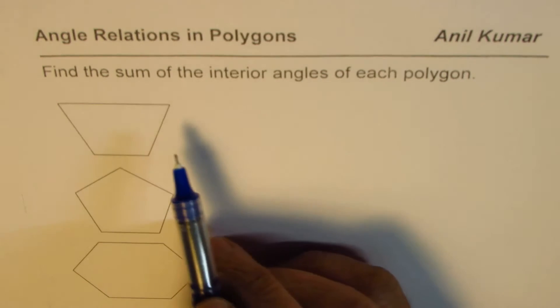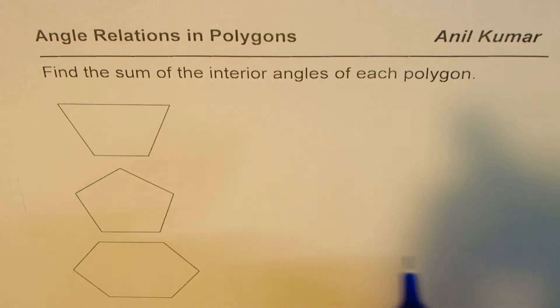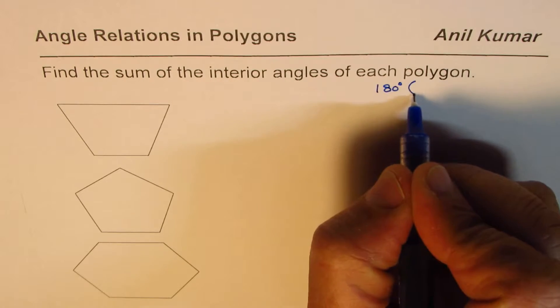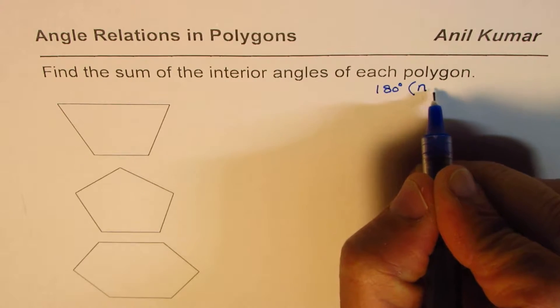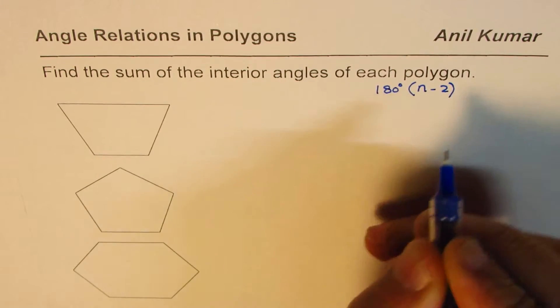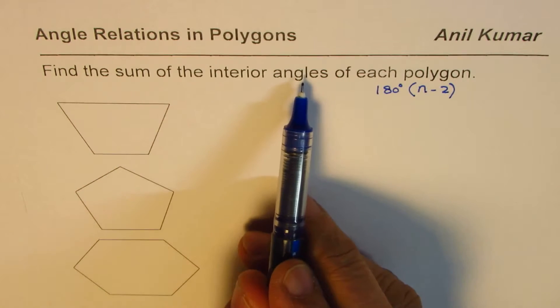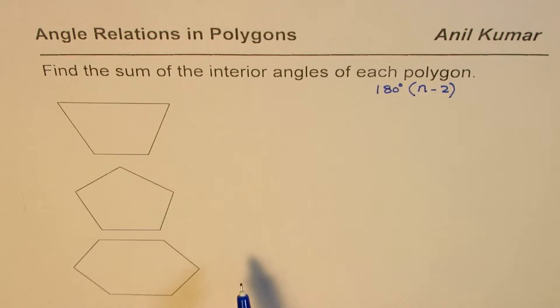The formula for the sum of interior angles is 180 degrees times n minus 2, where n is the number of sides. That is the formula which you can apply to find the sum of interior angles for each polygon.